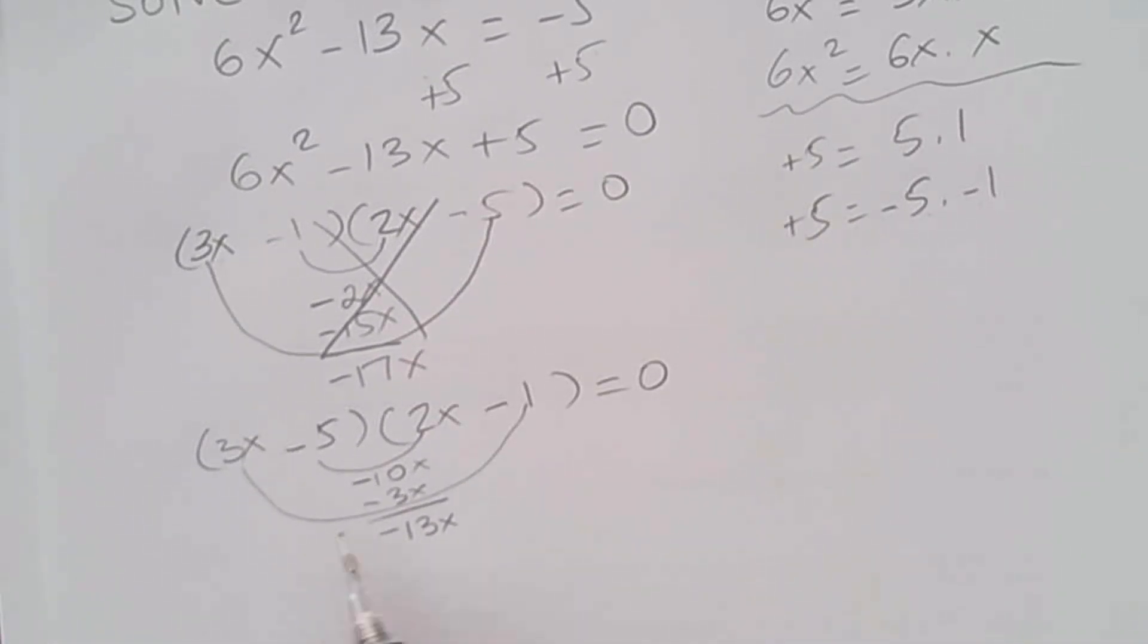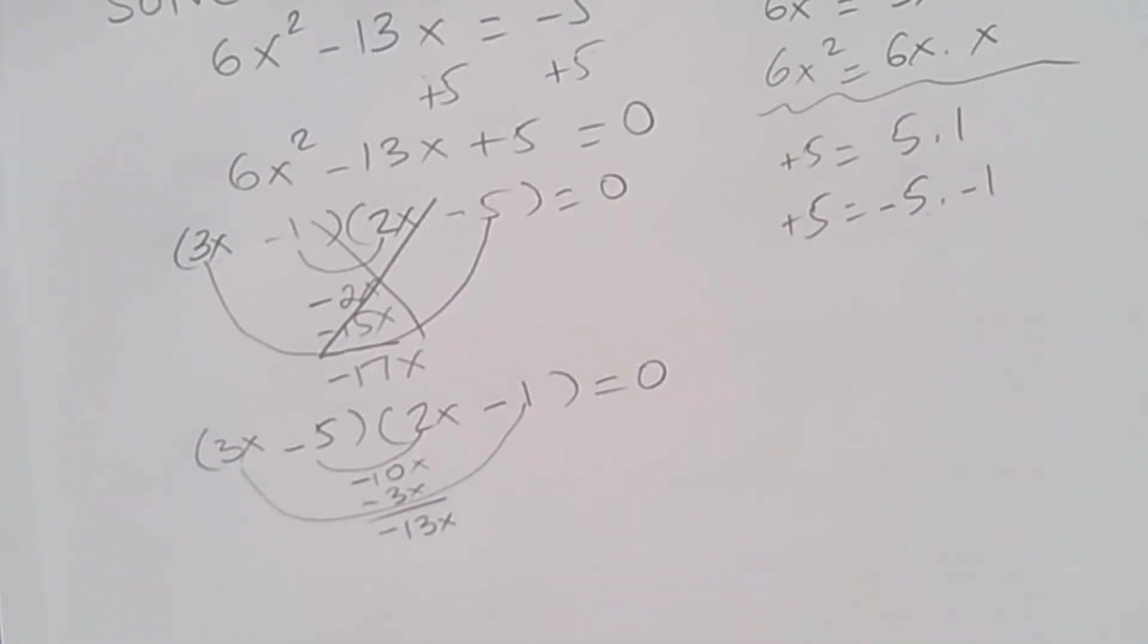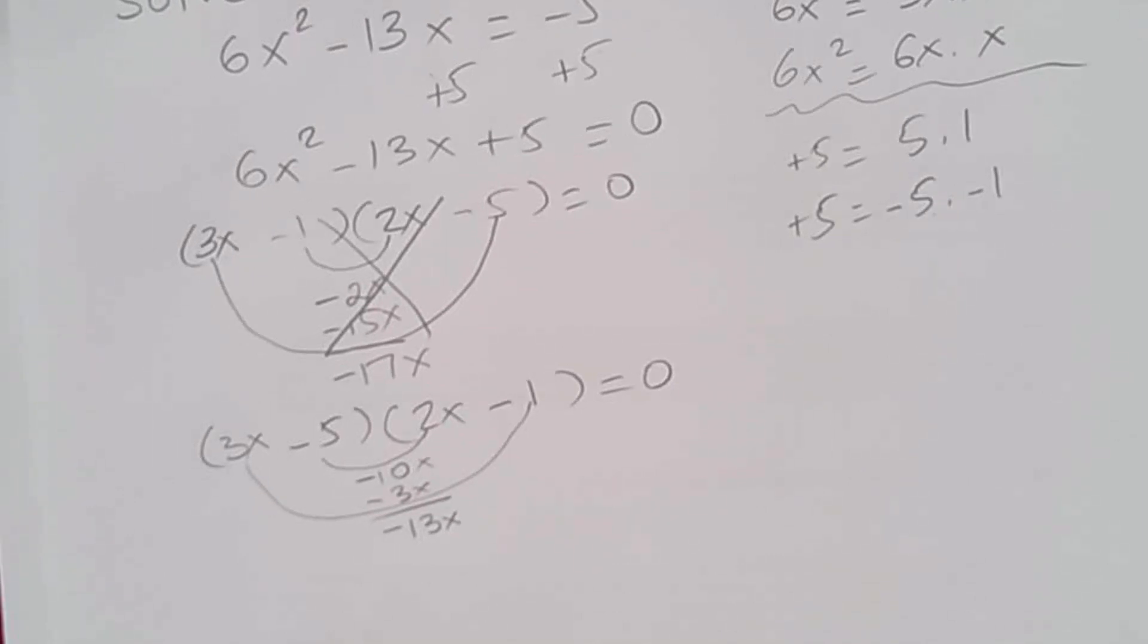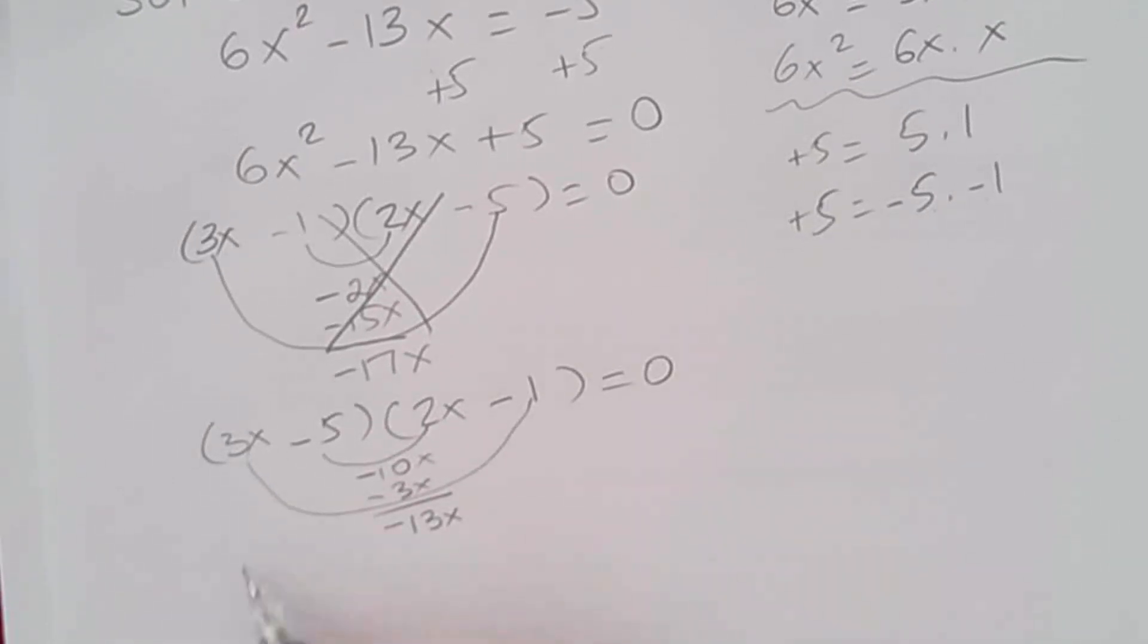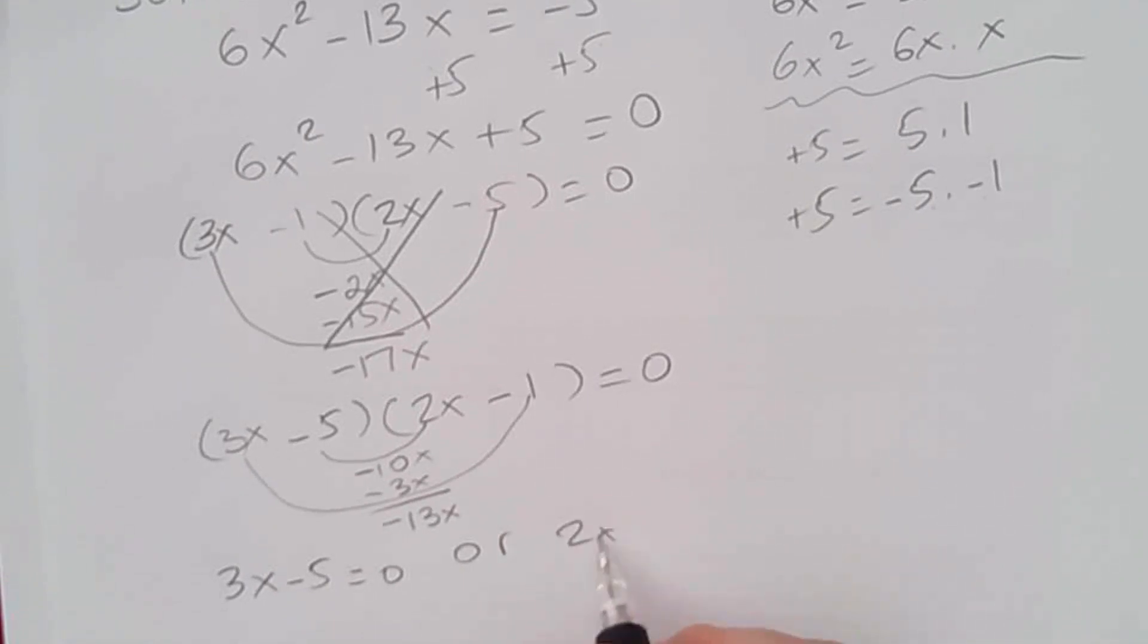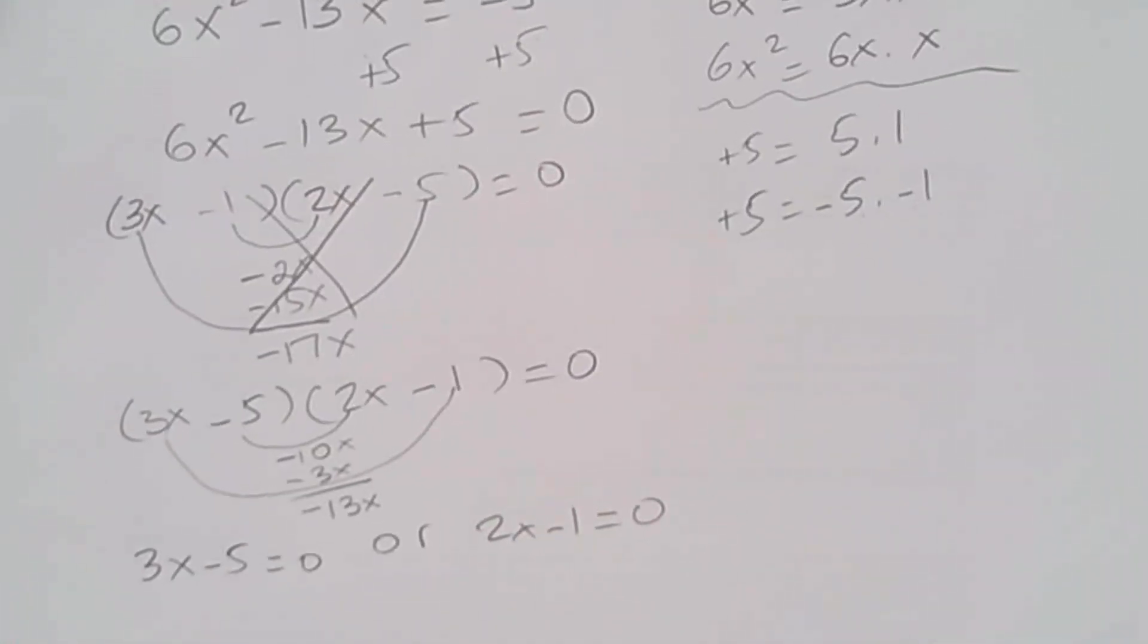3x minus 5 times 2x minus 1 equal to 0. Now, we set each factor containing a variable equal to 0. So 3x minus 5 equal to 0. Or 2x minus 1 equal to 0. We do this to solve the equation.